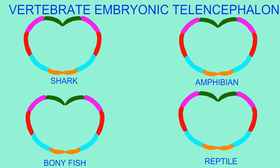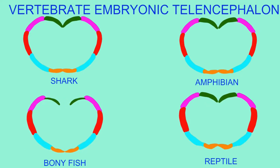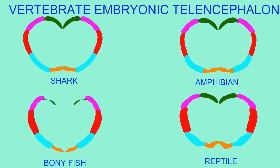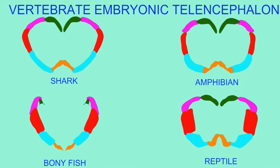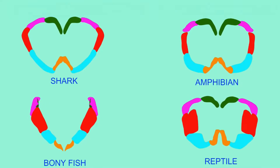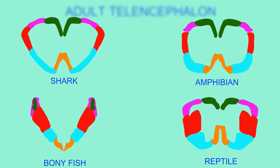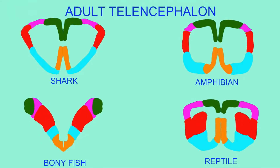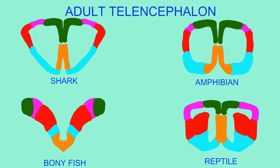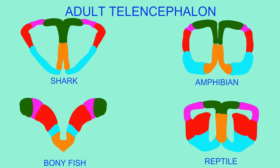None of these are unique to humans. In fact, all of these regions go back to the earliest vertebrates. So the regions of the human brain are derived from ancestral vertebrate regions.